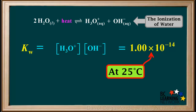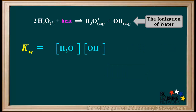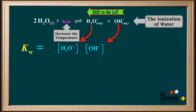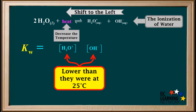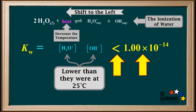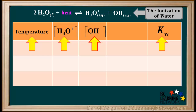Going back to 25 degrees, the value of Kw was 1×10⁻¹⁴. If we decrease the temperature to below 25 degrees, this would remove heat from the system. The equilibrium would compensate by shifting to the left, and the concentrations of hydronium and hydroxide would both be lower than they were at 25 degrees, and their product, Kw, would be less than 1×10⁻¹⁴. Now we'll summarize how temperature affects the concentration of hydronium, the concentration of hydroxide, and Kw.